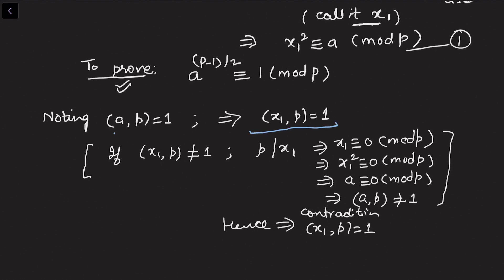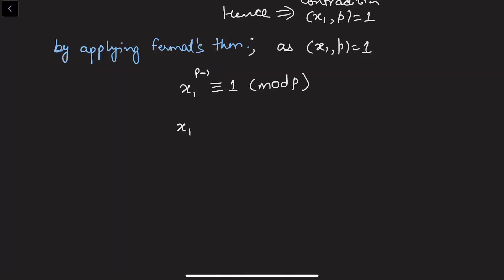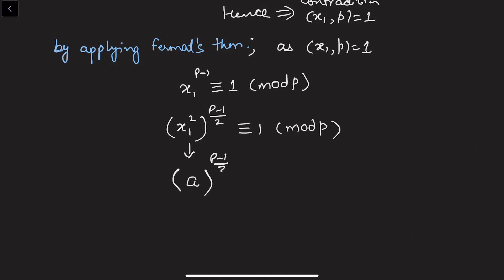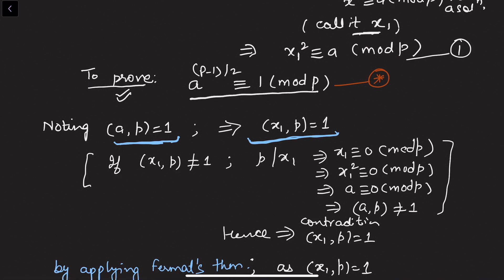Since gcd(x₁, p) = 1, we can apply Fermat's theorem: x₁^(p-1) ≡ 1 (mod p). We can rewrite this as (x₁²)^((p-1)/2) ≡ 1 (mod p). Replacing x₁² with a, we get a^((p-1)/2) ≡ 1 (mod p). This proves the forward direction — the congruence holds when a is a quadratic residue.